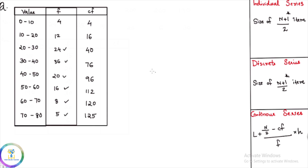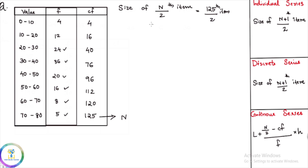This equation applies to the size of n/2. For continuous series, we use n/2 instead of (n+1)/2. n is the last cumulative frequency value, which is 125. So n/2 is equal to 125/2, which equals 62.5.